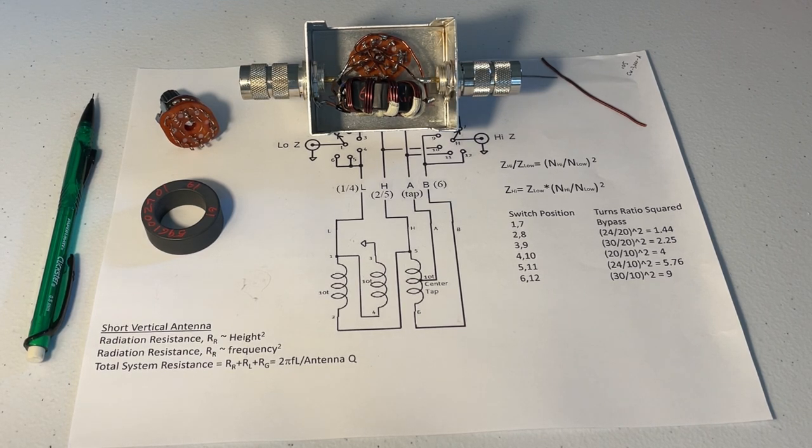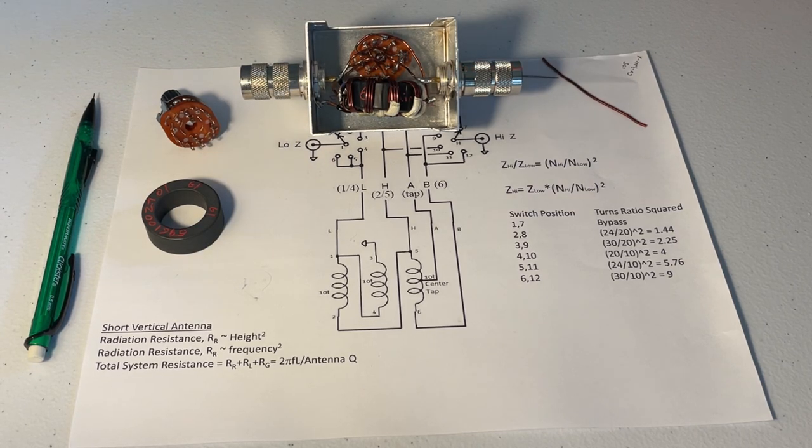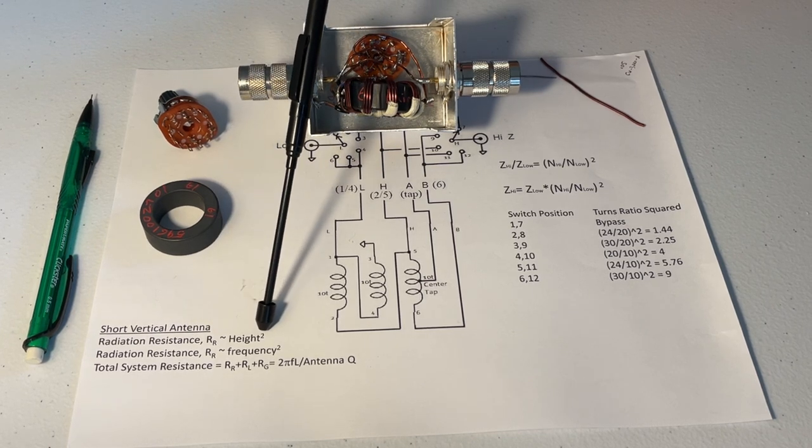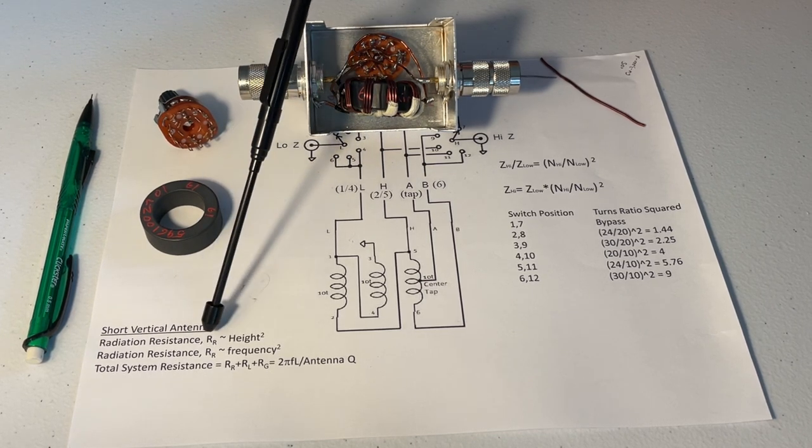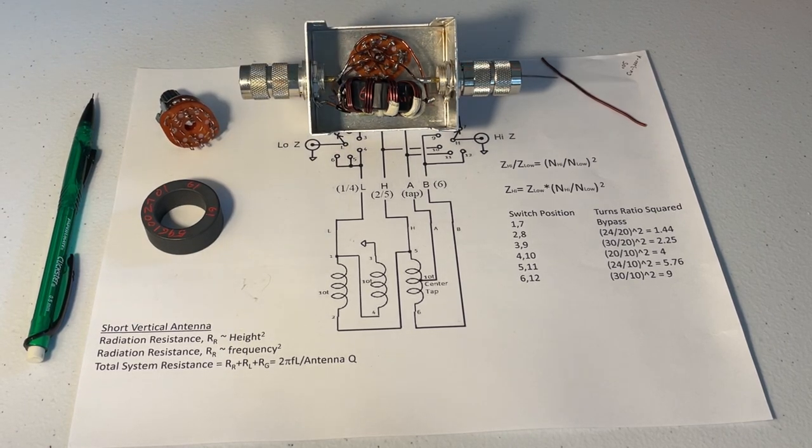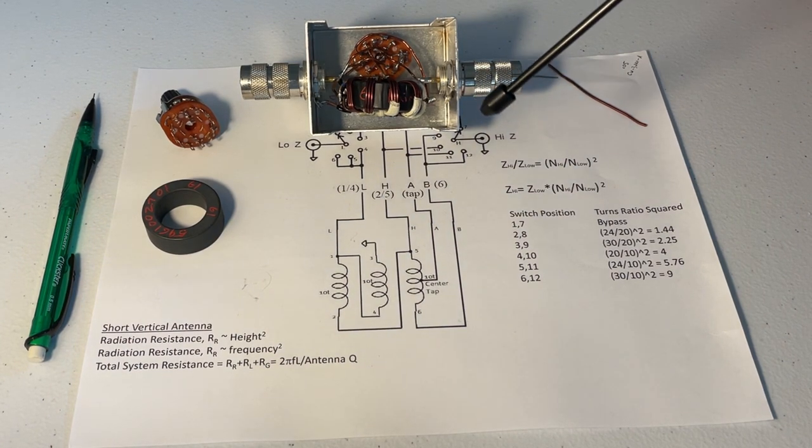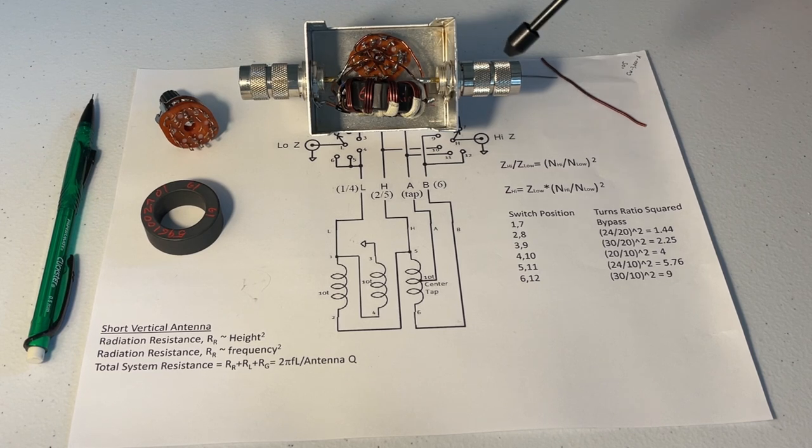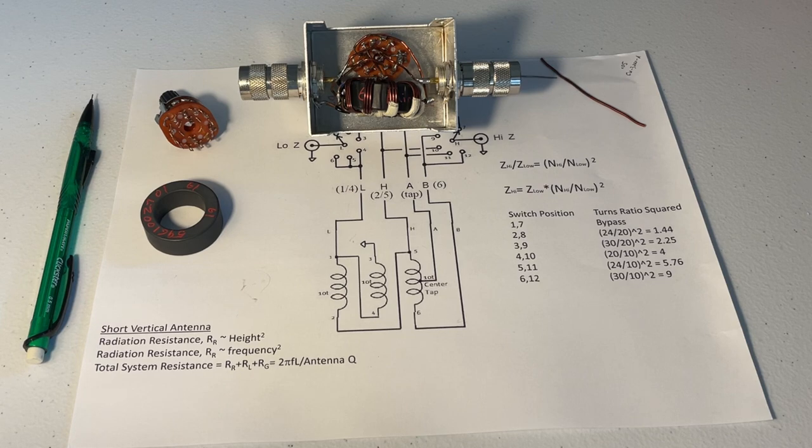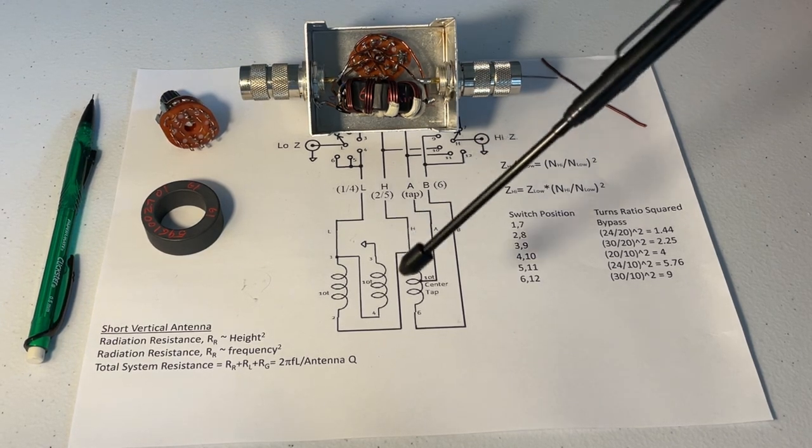Now for short vertical antennas, as you're probably well aware, the radiation resistance is very low because the radiation resistance is proportional to the height of the antenna squared. But it's also a function of the frequency squared or the wavelength. As the height reduces and the wavelength gets longer or the frequency gets lower, the radiation resistance really starts to suffer drastically.